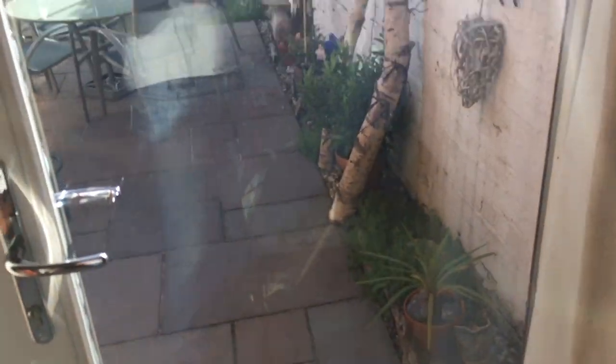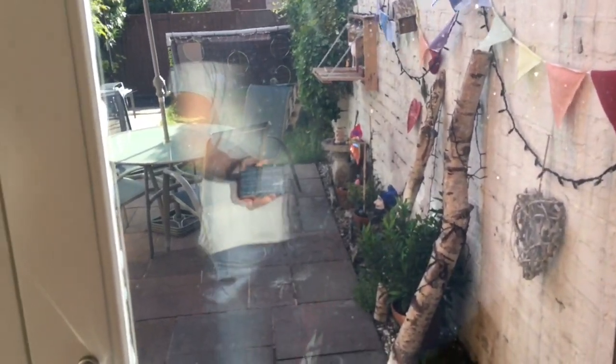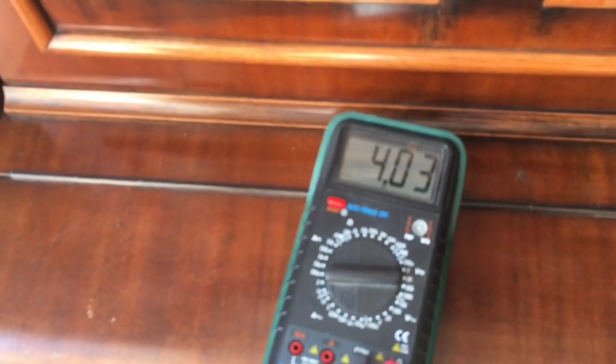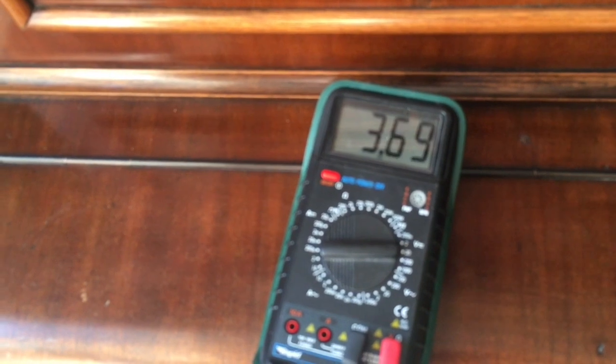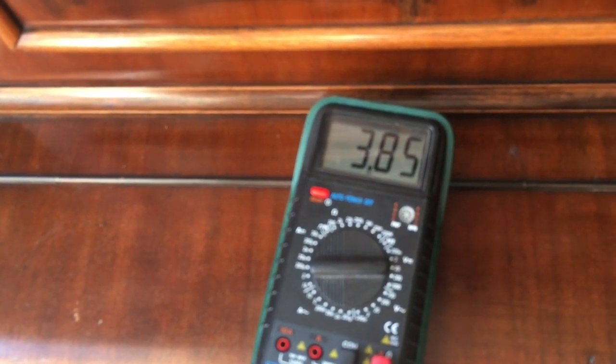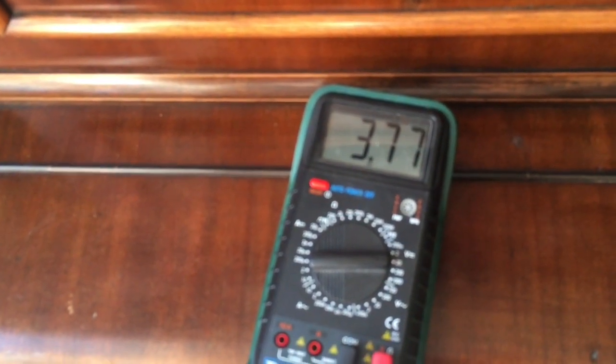And you can see straight away that the voltage it's producing is more than doubled. It's kind of getting up there to nearly four volts. So what it's doing is taking the energy from the sun and turning it into electrical energy.